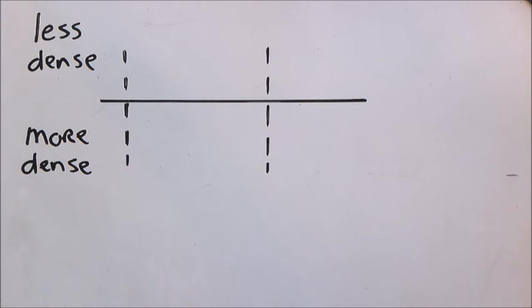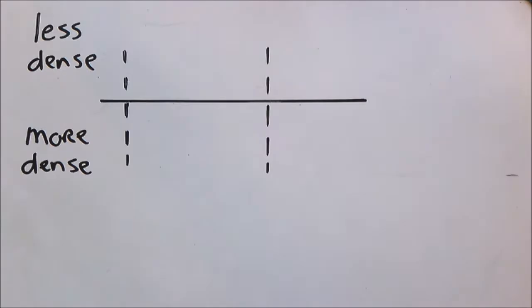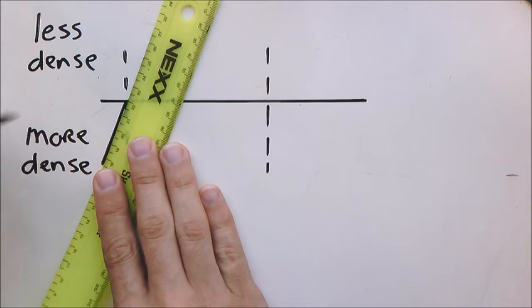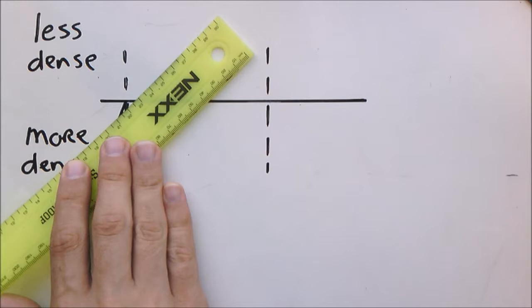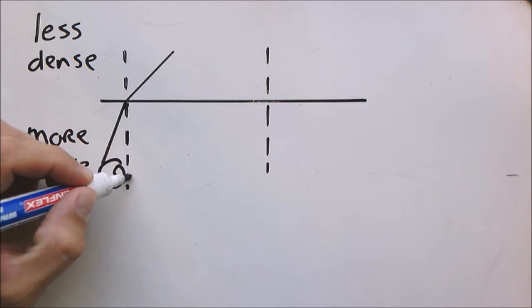Today we're going to talk about the critical angle. First, let's look at the following scenario: you've got a boundary line, a less dense medium at the top and a more dense medium at the bottom. A light ray going from a more dense to a less dense medium will always refract away from the normal. This is our incident angle and this is our refracted angle, refracting away from the normal.